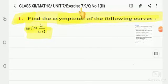Unit 7, exercise 7.9, question number 1, third subdivision. Find the asymptotes of f(x) equals 3x divided by root of x square plus 2.